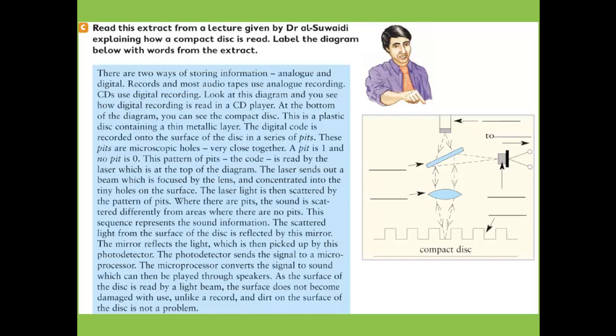The code is read by the laser, which is at the top of the diagram. The laser sends out a beam which is focused by the lens and concentrated into the tiny holes on the surface. The laser light is then scattered by the pattern of pits. Where there are pits, the sound is scattered differently from areas where there are no pits. This sequence represents the sound information.